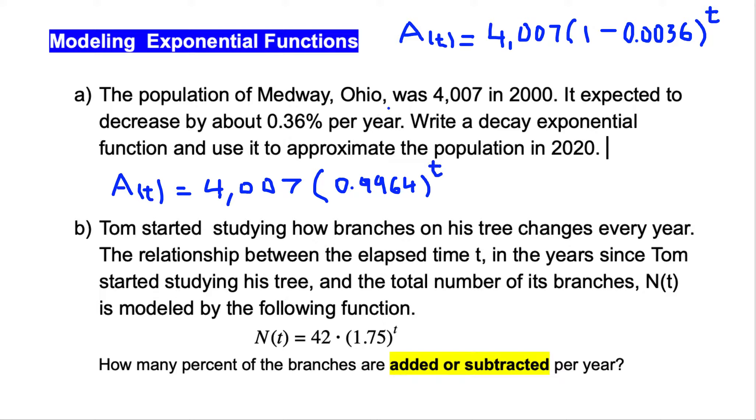What we are looking to find is how much population is going to be in 2020. This population of 4,007 was in 2000. From 2000 to 2020 are 20 years.